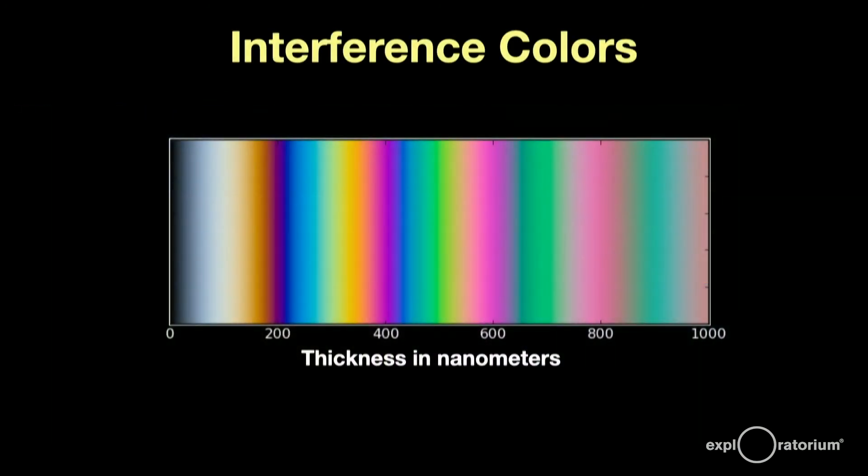Here's a chart of the bubble colors with the corresponding thickness along the bottom. A nanometer is a billionth of a meter. Again, the spectral pattern repeats with multiple wavelengths as they cancel. The black and white areas on the left side is a whole topic that we don't have time for during this talk. Maybe we'll do a whole Full Spectrum Science on bubbles in the future.